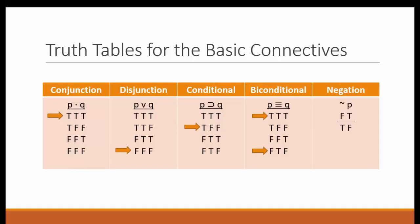This is an easy way to remember those tables. If you can remember the unique row, you can remember the rest of the table. If you remember that only the first row of the conjunction is true, you know all the other values under the conjunction are false. The unique row for the disjunction is the last row, in which both statements are false, resulting in the disjunction being false. And for the conditional, only row two is false. The biconditional is true only if both statements have the same truth value, true or false. The negation symbol just reverses the value of the original statement.